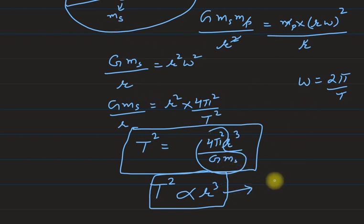This result also holds good if you take the orbit to be elliptical, but in that case you have to replace r with the semi-major axis. If semi-major axis is represented by small a, then T² is proportional to a³.